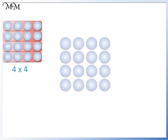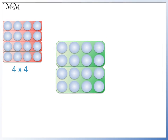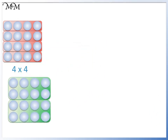Let's see if we can group these counters in a different way. We can group them into 8s. We have 1 lot of 8 and 2 lots of 8, so we have 2 times 8.